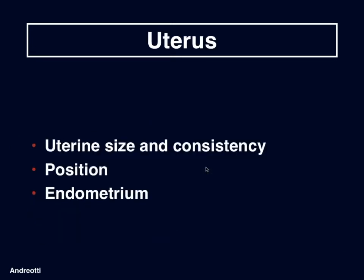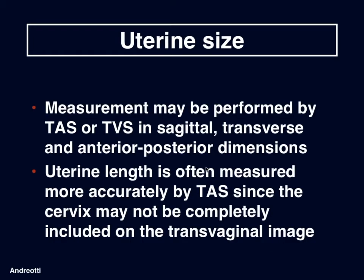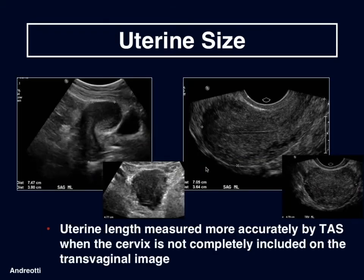Moving on, we'll talk about uterine size, consistency, and position. The measurement of the uterus may be performed by transabdominal or transvaginal sonography in the sagittal, transverse, and anterior-posterior dimensions. The uterine length is often measured more accurately by the transabdominal approach, since the cervix may not be completely included on the transvaginal image. Here we can see a transabdominal image where we can measure the uterus from the bottom of the cervix clearly to the top, whereas on the transvaginal image of the same patient, the cervix is not completely included. One would need to pull the probe out enough to include the cervix for an accurate transvaginal measurement.